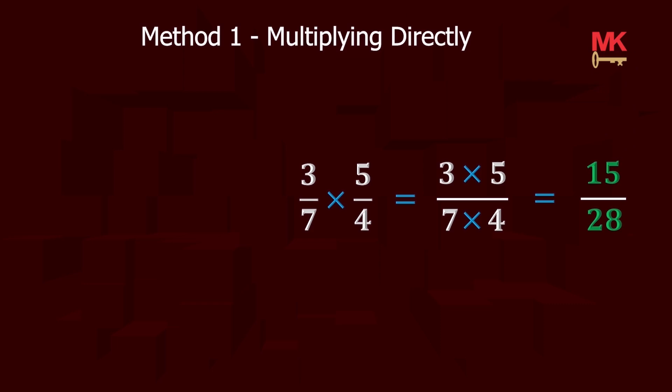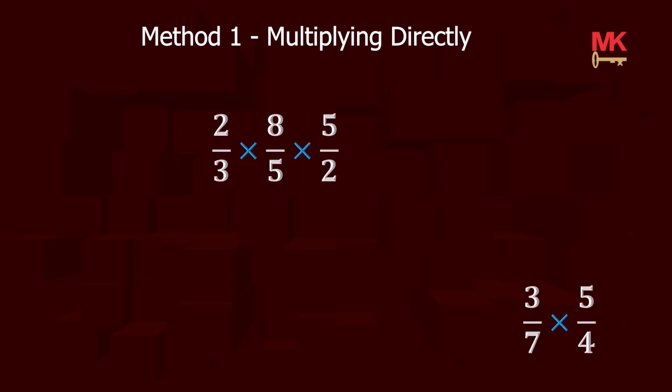Let's do another example together. Just like the previous example, all numerators multiply themselves. All denominators multiply themselves. From the multiplication table, 2 times 8 is 16 and 16 times 5 is 80. For the denominators, 3 times 5 is 15 and 15 times 2 is 30.